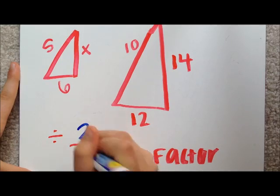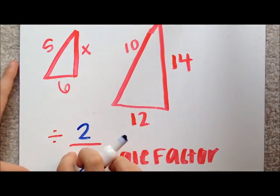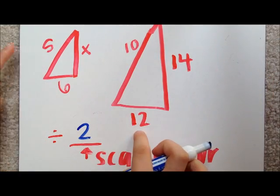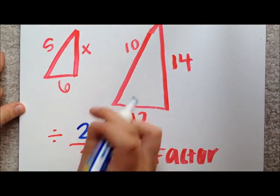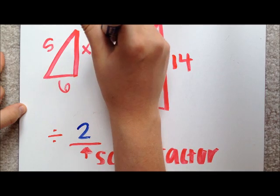10 divided by 2 is 5, 12 divided by 2 is 6, and 14 divided by 2 is 7.